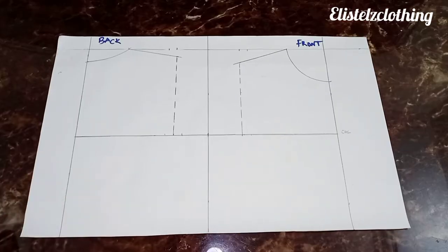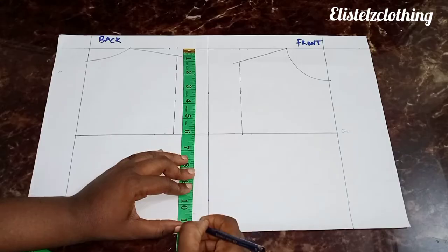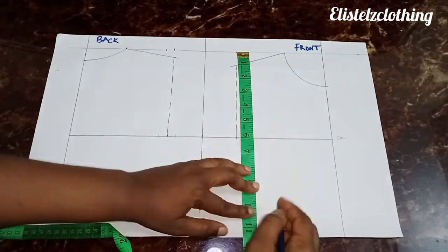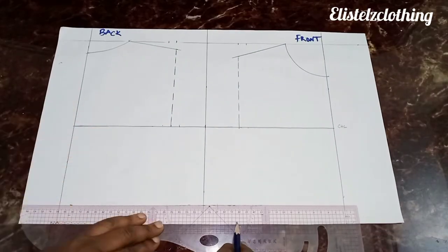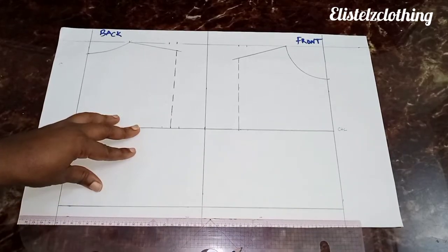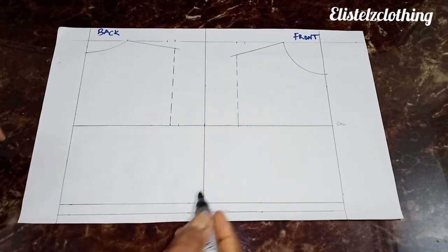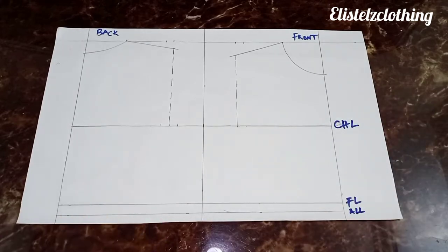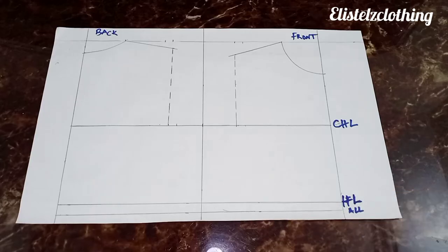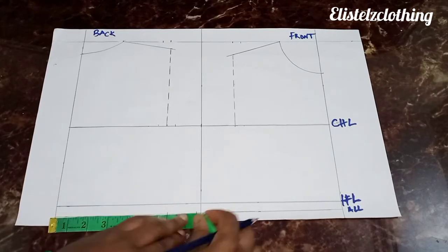From her shoulder to her half length is 10.5; we add 0.5 allowance to that. We mark it across from the back to the front and connect with a straight line. We label that as our half length with the allowance. Then we proceed to mark her waist.